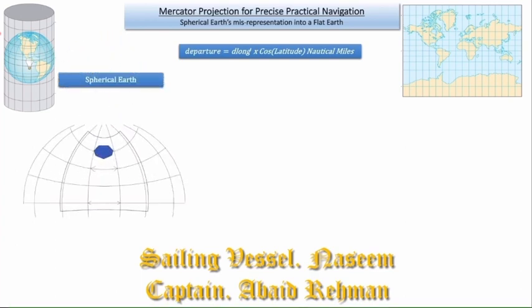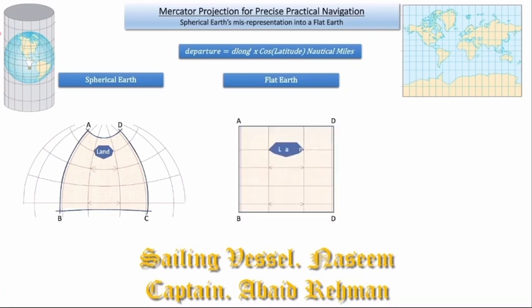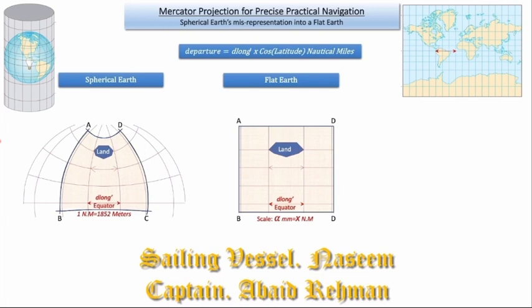Let's consider a region of a spherical Earth bounded by the area A, B, C, D, which we want to display on a flat Earth. Since the meridians converge toward the poles, drawing them as parallel lines means the land has been stretched in the east-west direction away from the equator. Notice that along the equator, the distortion is zero because there is no stretch.